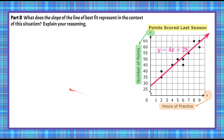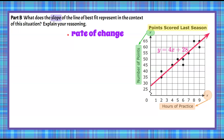Let's move on to Part B: What does the slope of the line of best fit represent in the context of this situation? Pause the video, record your answer, then come back to check. Welcome back. Slope is another way to represent rate of change in a real-world problem. We're talking about a team scoring points in relation to hours of practice. Rate of change, or slope, is a ratio of Y to X.